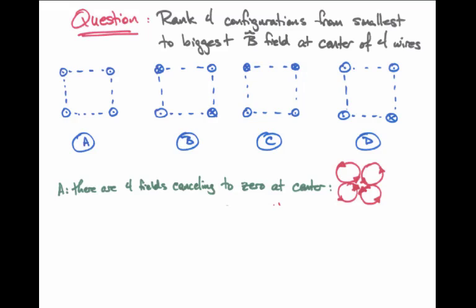In case A, the four currents come out of the page, and we can draw the circular magnetic fields around each of these four currents as moving counterclockwise. When we look at how these four magnetic fields add to one another at the center of the four wires,